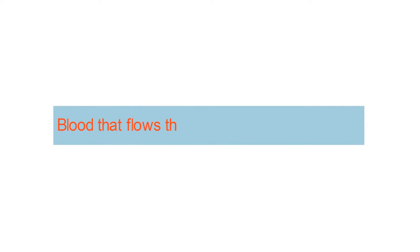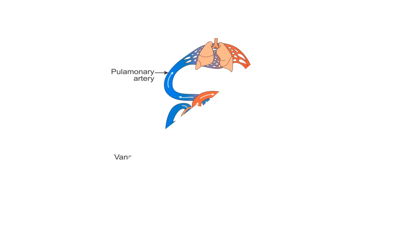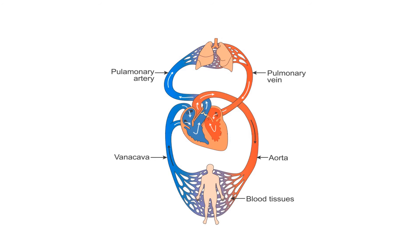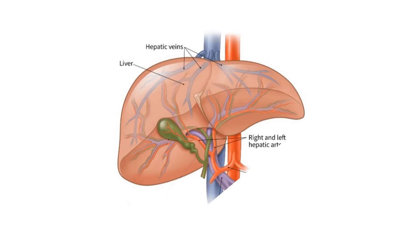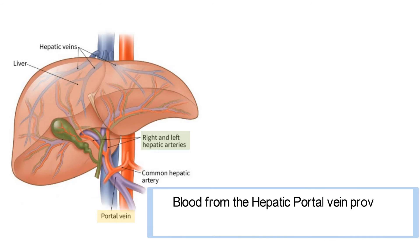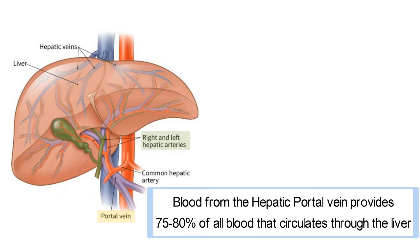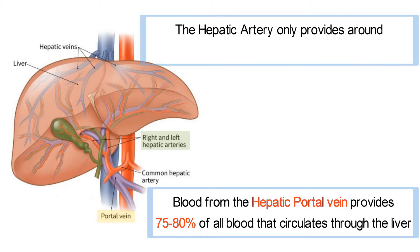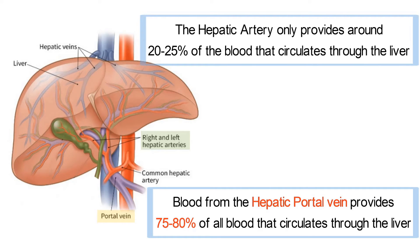Number two: blood that flows through the liver is mixed blood. Most organs receive blood flow from arteries and blood flows out through venules or veins, meaning blood in the venous system is leaving an organ. Because of its portal system, the liver receives blood from the venous system and does not only receive blood from the arterial system. In fact, blood from the hepatic portal vein provides 75–80% of all blood that circulates through the liver, while the hepatic artery only provides around 20–25%.